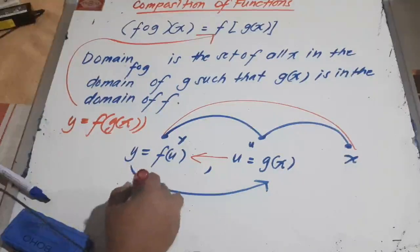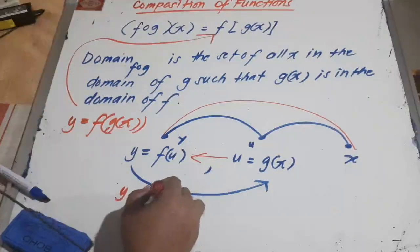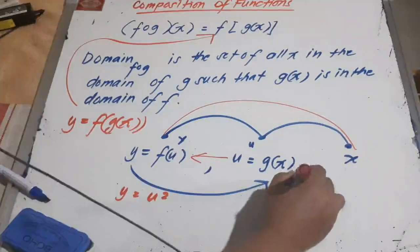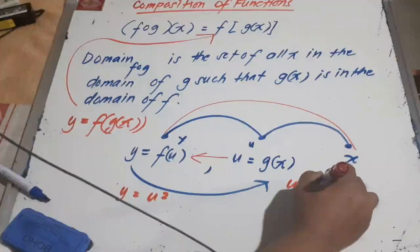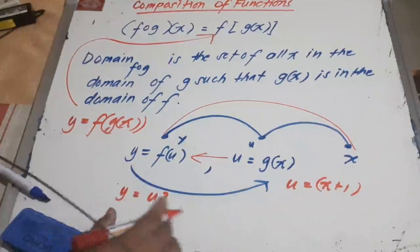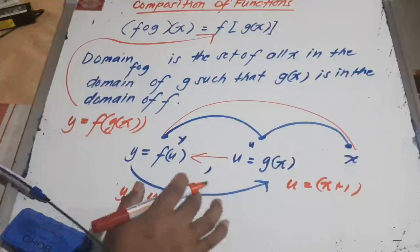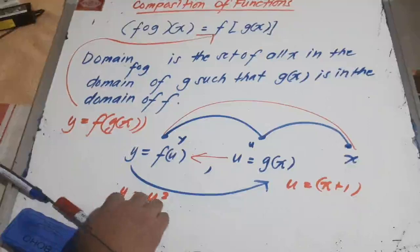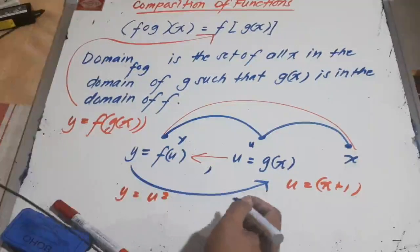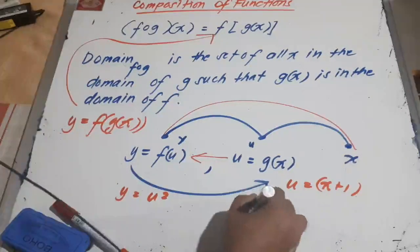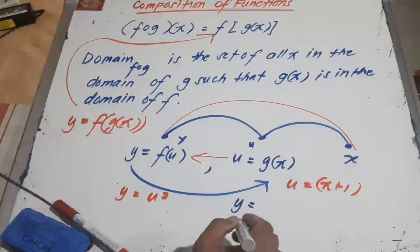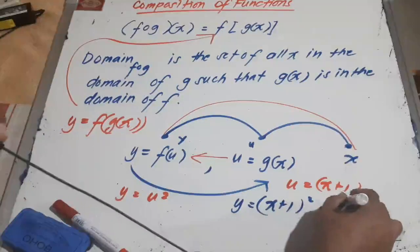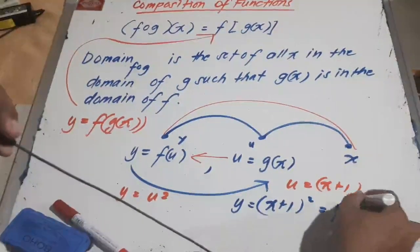For example, if we have y equals u squared, and u equals x plus 1, to form the function of y in terms of x, we substitute x plus 1 in place of u. So we have y equals x plus 1, squared. This is now your f of g of x — the composite function.